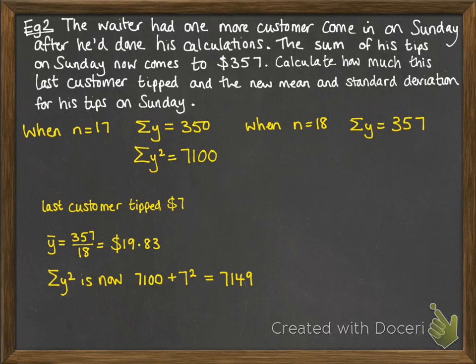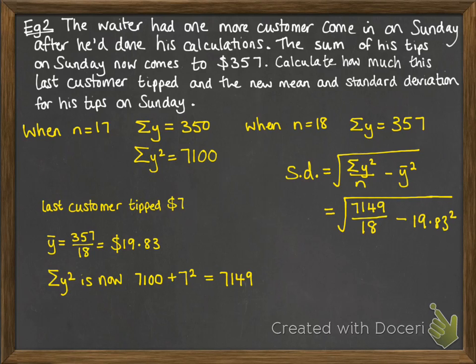Now if we want to do the sum of y squared, we need to add on that last value squared. So the last person tipped 7, 7 squared is 49. Add it on to our previous total of the y squareds, and we get 7,149. Then we can go through and work out the standard deviation as normal, and we get $1.95.